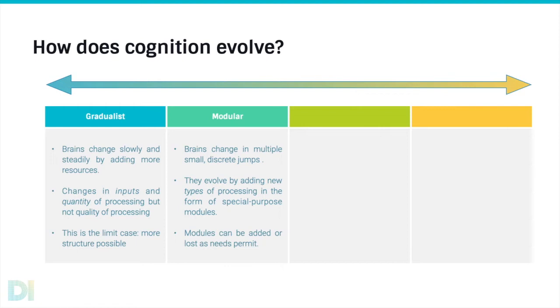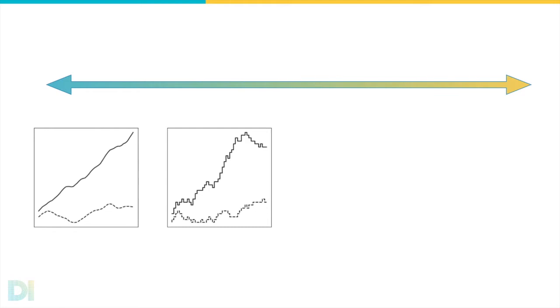Contrast that with a modularist view, which says that brains change in multiple but small discrete jumps. In other words, you add new types of process, new special purpose modules in order to deal with new kinds of challenges. And again, these can be added or lost as needs permit. So the picture looks very similar, but now rather than a very steady upward decline or meander, what you have are sort of big little jumps here and there. Environmental pressures cause the need to add or subtract modules. And these modules are thought of as special purpose encapsulated little programs that handle new jobs in the environment or handle new ways of processing information that's already there.